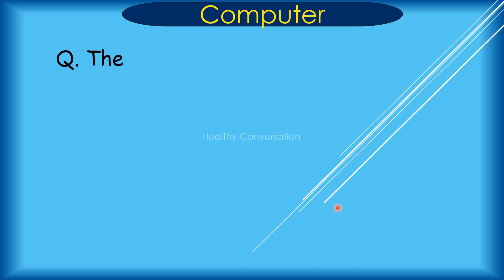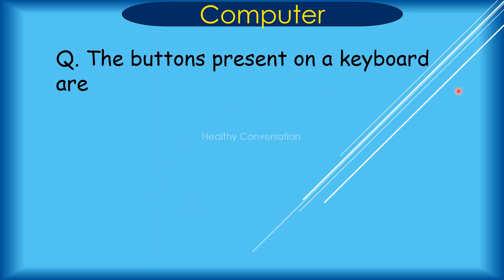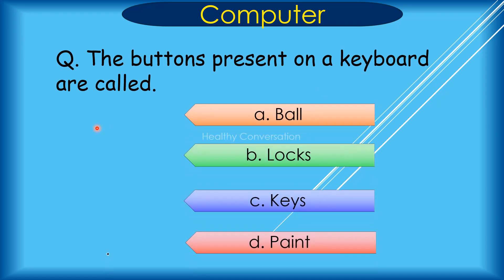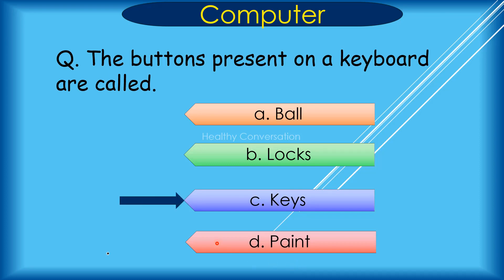Question: The buttons present on a keyboard are called? A. Ball, B. Blocks, C. Keys, D. Paint. Correct answer is C. Keys.